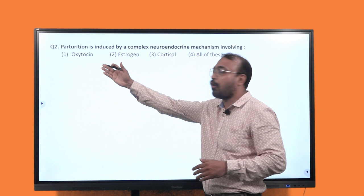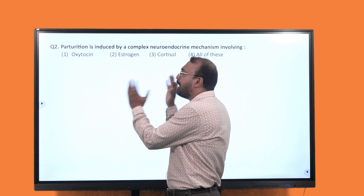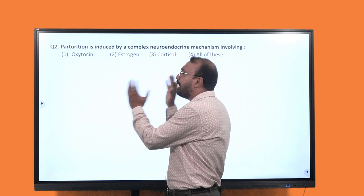The next question: parturition is induced by a complex neuroendocrine mechanism involving - the options are the first option: oxytocin, second one is estrogen, third one is cortisol, fourth one is all of these. Right? So if you want to identify the correct answer for this question.